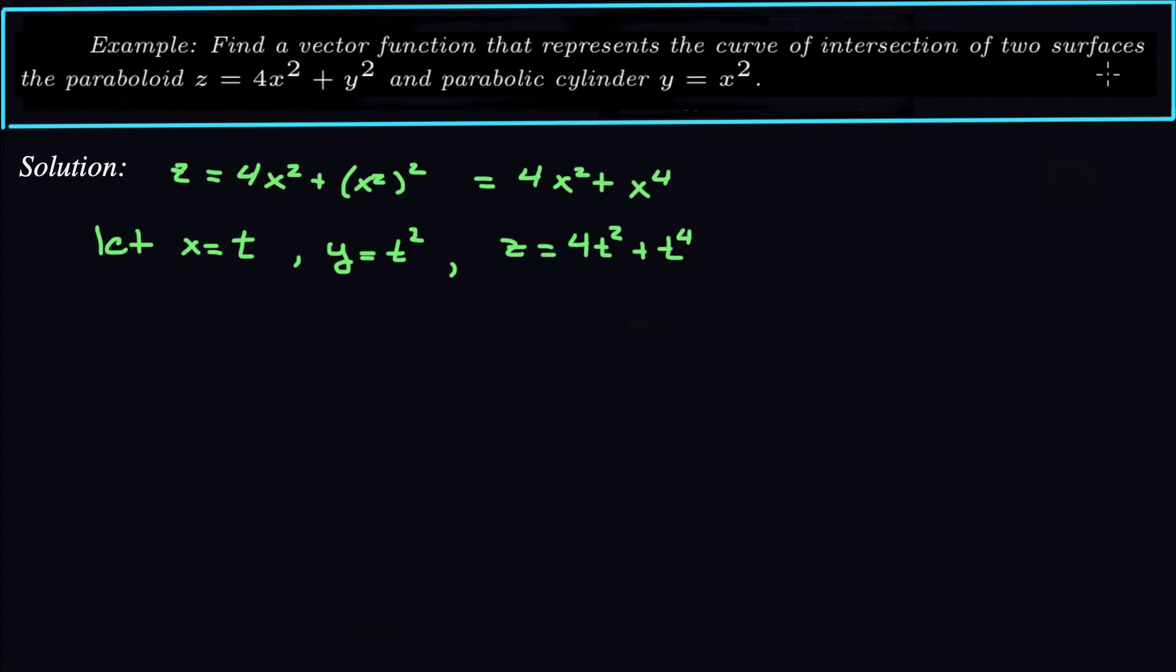So that would actually be our vector function that would represent this curve of intersection. R of t would be t, t squared, 4t squared plus t to the 4.